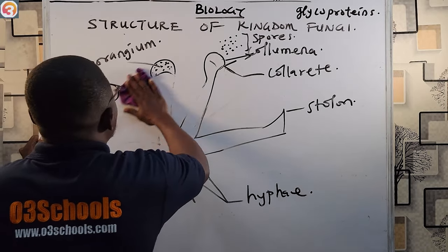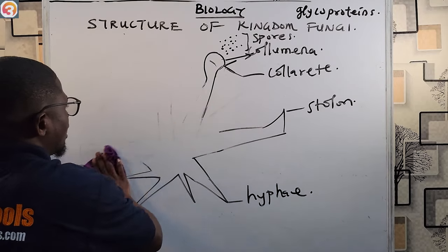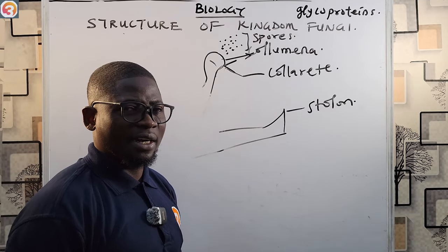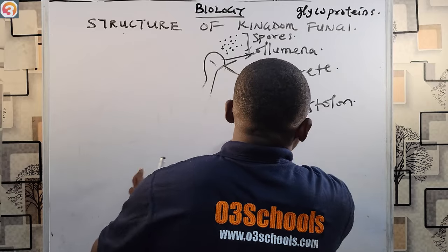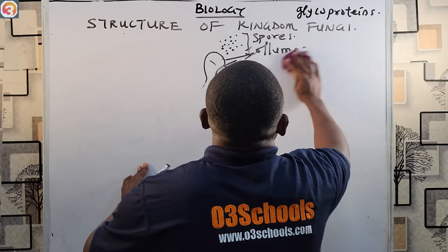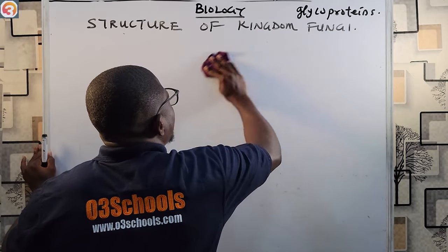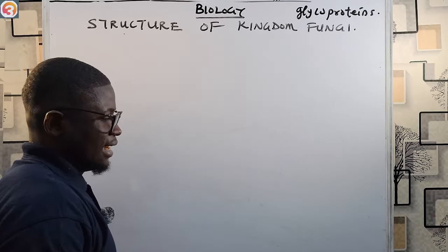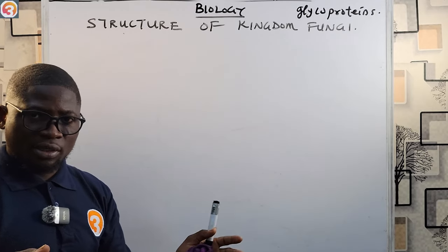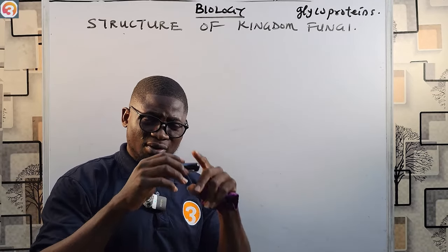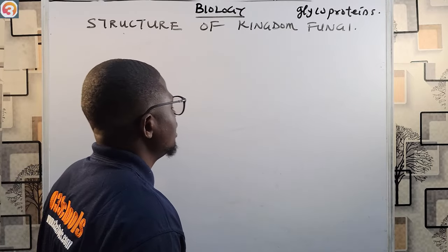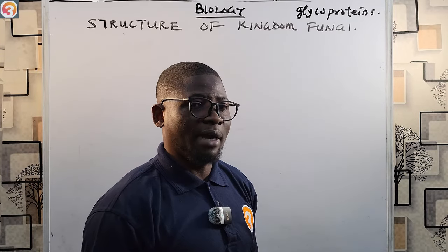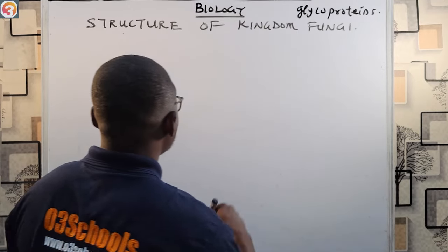Now let's look at the mushroom. The mushroom is an umbrella-shaped structure that contains a stock or stem, and a cap called the pylos. The reproductive part of the mushroom is the pylos or cap. Let's quickly see a sketch of the mushroom.